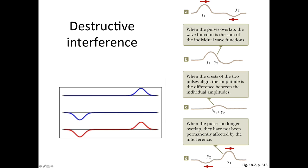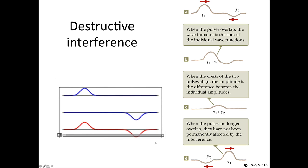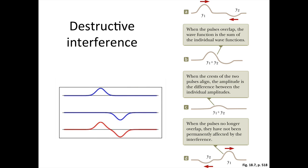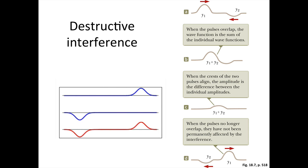Destructive interference, on the other hand, is when we have a wave or a pulse with a positive amplitude added to one with a negative amplitude. In this case, they partially cancel each other out, and then they continue on uninterrupted. In this video, these two waves perfectly cancel each other out, so we end up with a flat piece of string at the point where they are just passing each other.